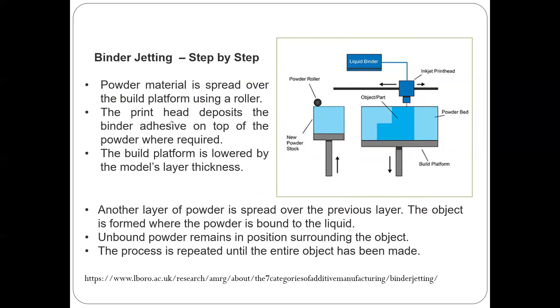This is another schematic illustration explaining the same process. Binder jetting is where powder material is spread over the build platform using a roller. The print head deposits the binder adhesive on top of the powder wherever it's required, so it's selective in nature.